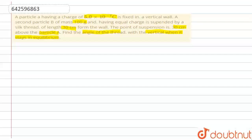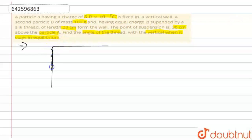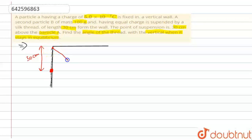Let us draw the figure first and then proceed. This is the wall. According to the question, a particle is fixed here — a point charge — and the distance from the wall to this charge is given as 30 centimeters. Now another particle of equal charge is suspended from the same wall, and this length is again 30 centimeters.